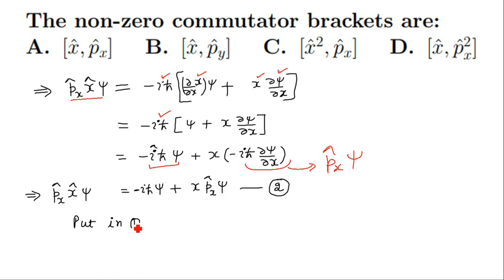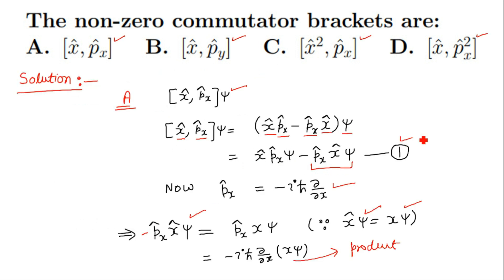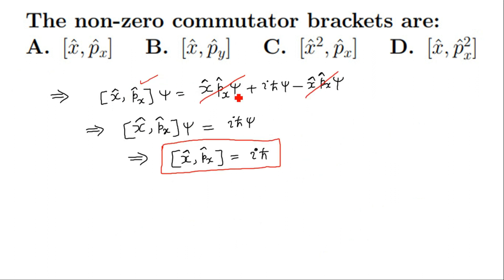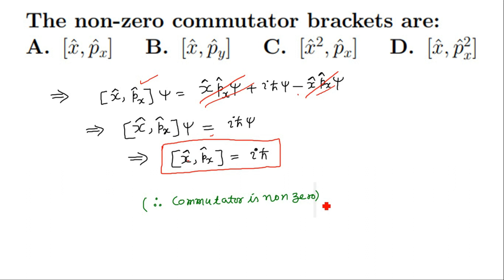Substituting this back into equation 1, the minus sign changes the signs of the other terms. We get x-cap p-x-cap psi minus the result just derived. The two x-cap p-x-cap psi terms cancel each other, leaving the commutator [x, px] psi equal to iota h-cross psi. Ignoring psi on both sides, the commutator [x-cap, p-x-cap] equals iota h-cross. This commutator is clearly non-zero.